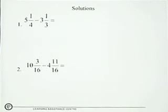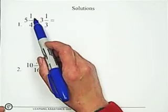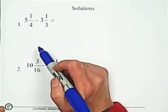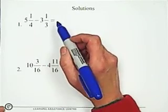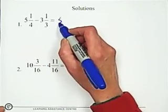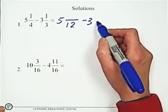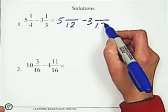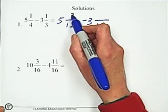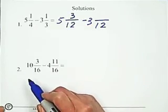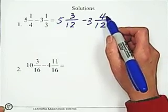Now I show you the solutions. The first question, 5 and 1 quarter minus 3 and 1 third. Find the least common denominator, 4 and 3 is 12. So 5 and 1 quarter becomes 5 and 3 over 12. And the 1 third becomes 4 over 12. Actually you can check. If you simplify 3 over 12, you still get that 1 quarter.